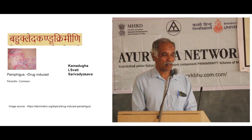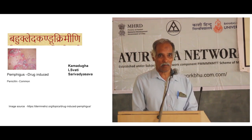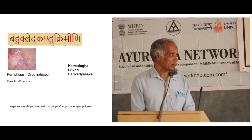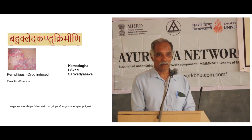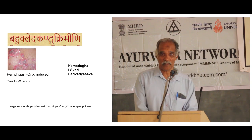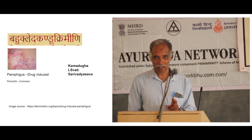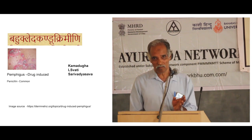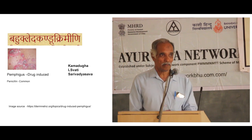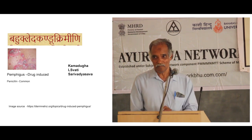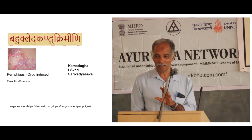Another variation is Bahu Kledha Kandu Krimi, where the patient would have more discharge, itching, or even the risk of Krimi. This is very typically seen in cases of Pemphigus. Now Pemphigus has mainly two varieties: Pemphigus vulgaris, which is an autoimmune disorder with a totally different prognosis, and a Pemphigus secondary variety. There is also another Pemphigoid region. These three are always confusing terms.